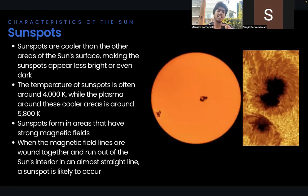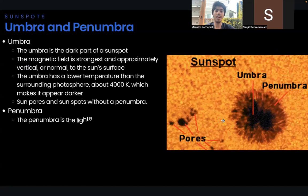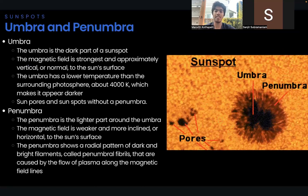Typically, sunspots last up to a few weeks until the magnetic fields weaken in the area and hotter plasma enters the area of the sunspots. There are two areas of the sunspot. First, let's talk about the umbra. The umbra is the dark part of the sunspot where the magnetic field is strongest and almost vertical or normal to the sun's surface.